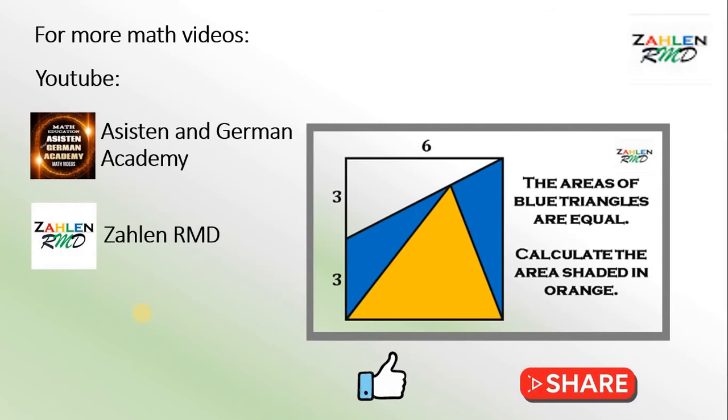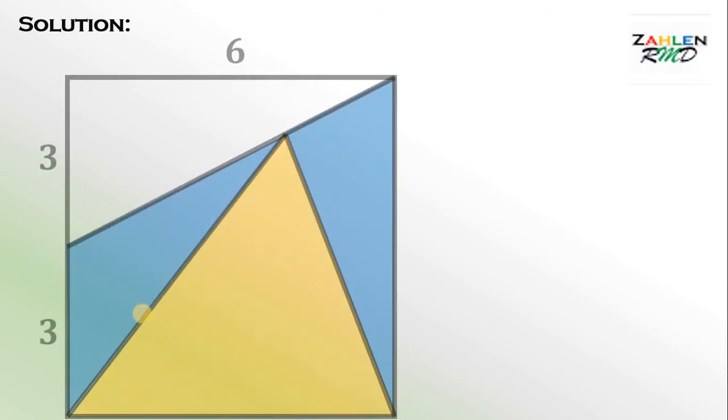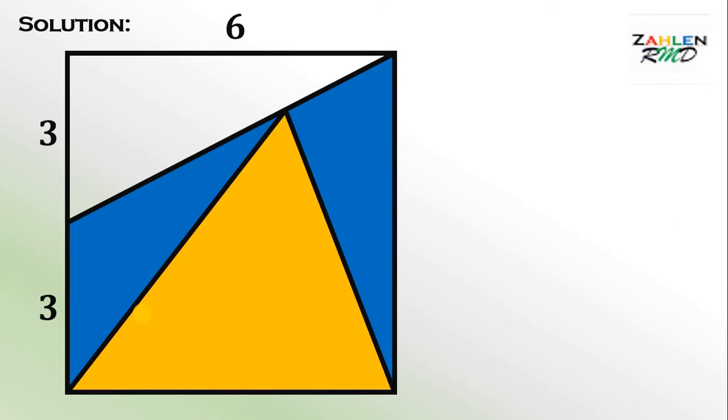So let's start with the solution. First thing to do is to make a perpendicular line like this. Next, let this length be equal to A. It follows that this side length is 6 minus A, because the length of this side is simply 6.